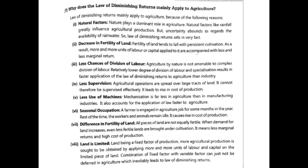Next, land is limited. Land is a fixed factor of production and cannot be increased — the availability of land remains the same. If production is to be increased, the law of diminishing returns becomes more applicable.